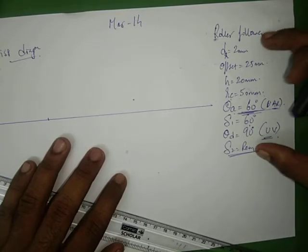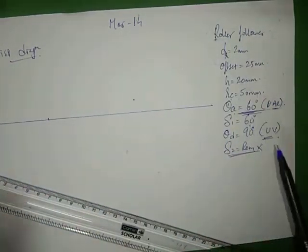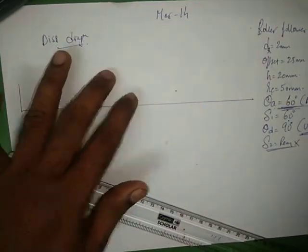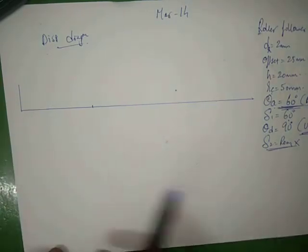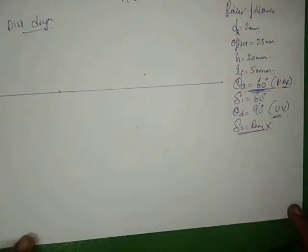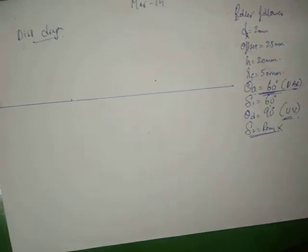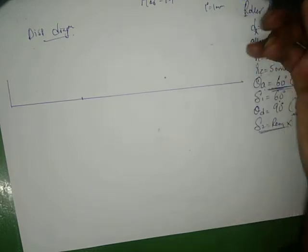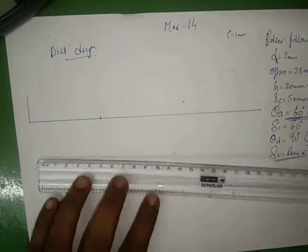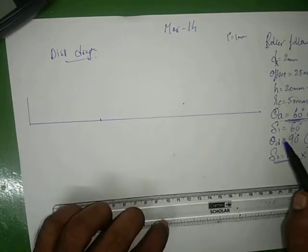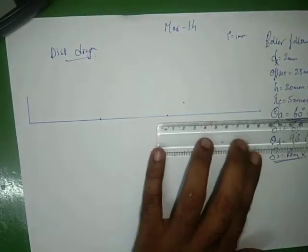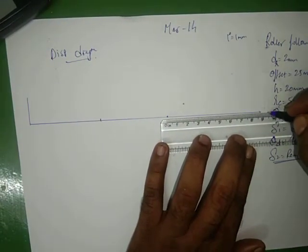If you are interested in the data part, we will generate the displacement diagram. The scale is 1 degree to 1 mm. Theta A is 60 degrees, delta 1 is 60 degrees, and theta D is 90 degrees.